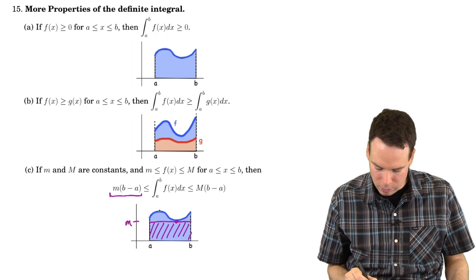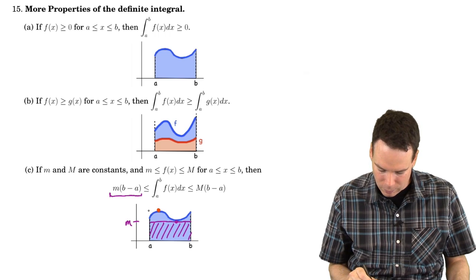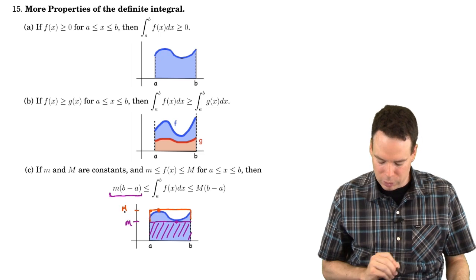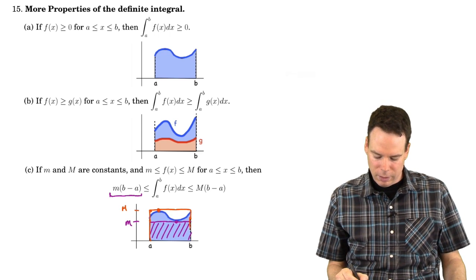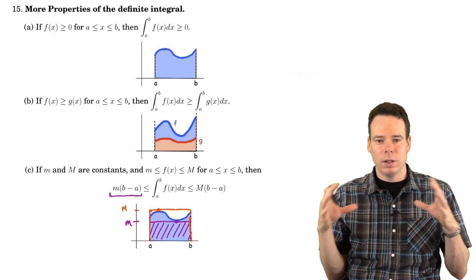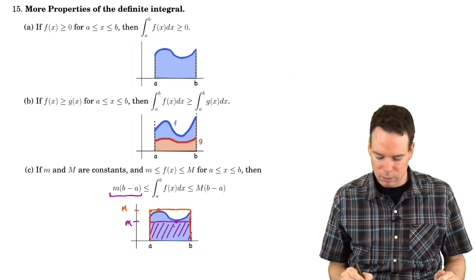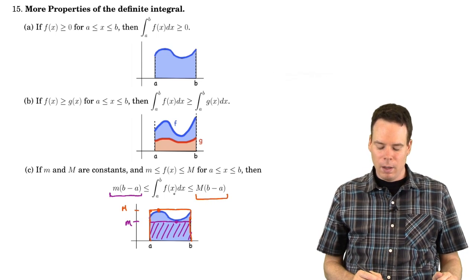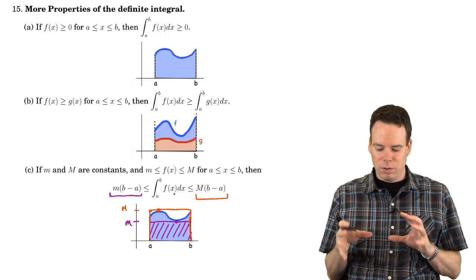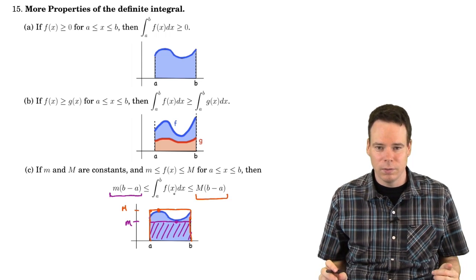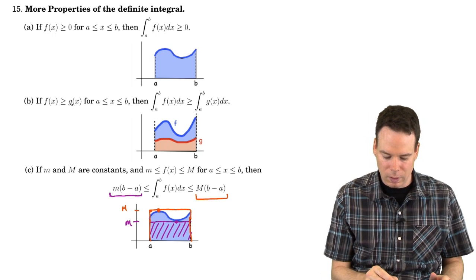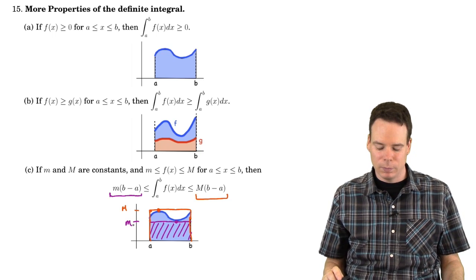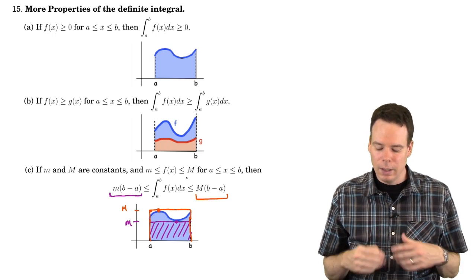Now what about the other inequality? If I take M to be the maximum and draw a horizontal line, then by similar reasoning, this big rectangle of height M and base (b minus a) has to enclose the area of the region under the curve. So the area of the big rectangle has to be bigger than the integral. These pictures are all centered around the case where the function is positive, but these results also hold where the function is negative and the values of m and M could be negative as well. Just as long as the inequalities are in the right directions, the inequalities all hold.